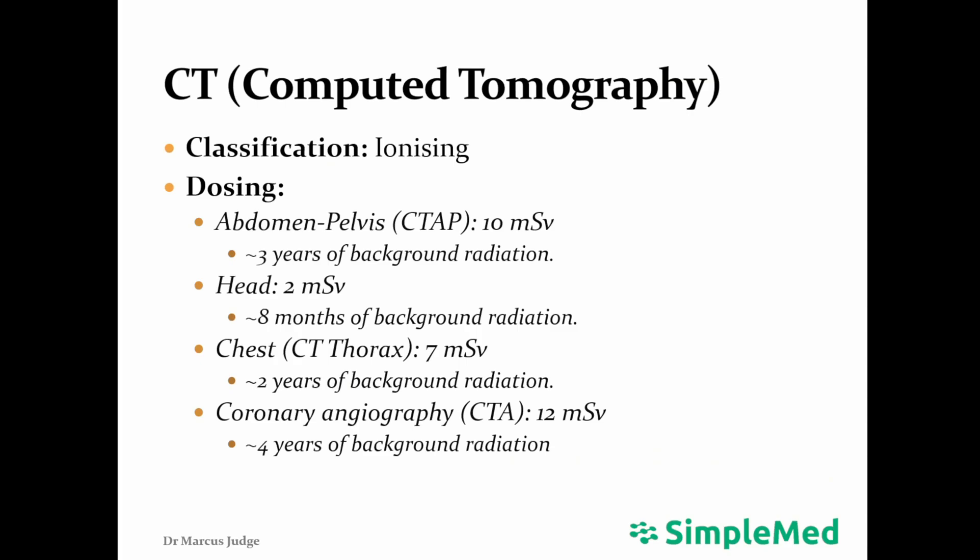Next up is computed tomography scans, known as CT scans. These are an ionizing form of scan and deliver much higher doses of radiation. For example, a CT-AP — CT abdomen-pelvis — delivers 10 mSv or 3 years of background radiation to the patient. A head CT delivers 2 mSv or 8 months of background radiation, concentrated at the head. For these reasons, CT scans must be thought about carefully, and risk versus reward must be considered.